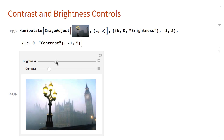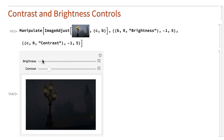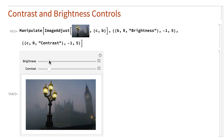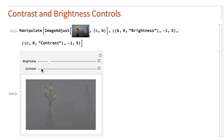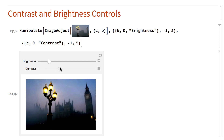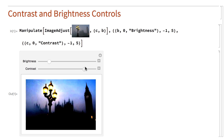The brightness control makes the image lighter or darker, which it does by making the pixel values bigger or smaller. The contrast control works by changing the distribution of pixel values, either by moving pixel values closer to a single value, which lowers the contrast, or by spreading the pixel values out, which increases the contrast.